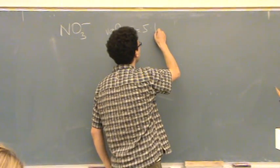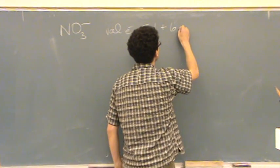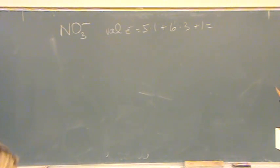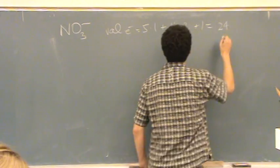Nitrogen's in column 5, there's one of them. Oxygen's in column 6, there's three of them. And then plus one for that minus charge. That'll be like this. 24, hopefully.